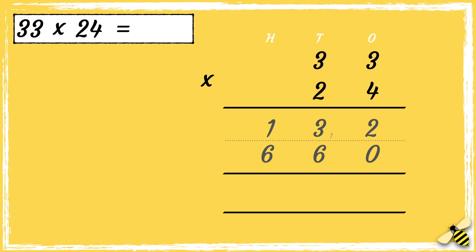The next step is to add the two answers together. Two add zero is two; three tens add six tens is nine tens. Then one hundred add six hundred equals seven hundred, so the answer is seven hundred and ninety two.